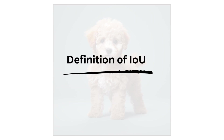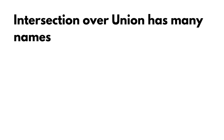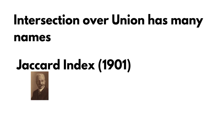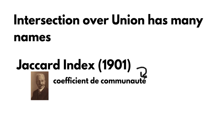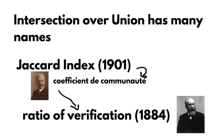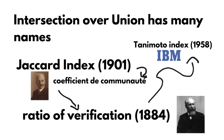Let's start with some definitions for the intersection over union metric. IOU has many names because it's such a fundamental quantity for many fields. It is usually called the Jaccard index in honor of Paul Jaccard, a professor of botany, way back in 1901. Paul Jaccard actually called it 'coefficient de communauté' in 1901. But it was already in use as the ratio of verification by a geologist named Gilbert. That quantity was also rediscovered under another name by the mysterious Tanimoto in 1958 in an internal memo at IBM. All this to say that the quantity is important for many uses and should be part of your toolbox, even outside of object detection.